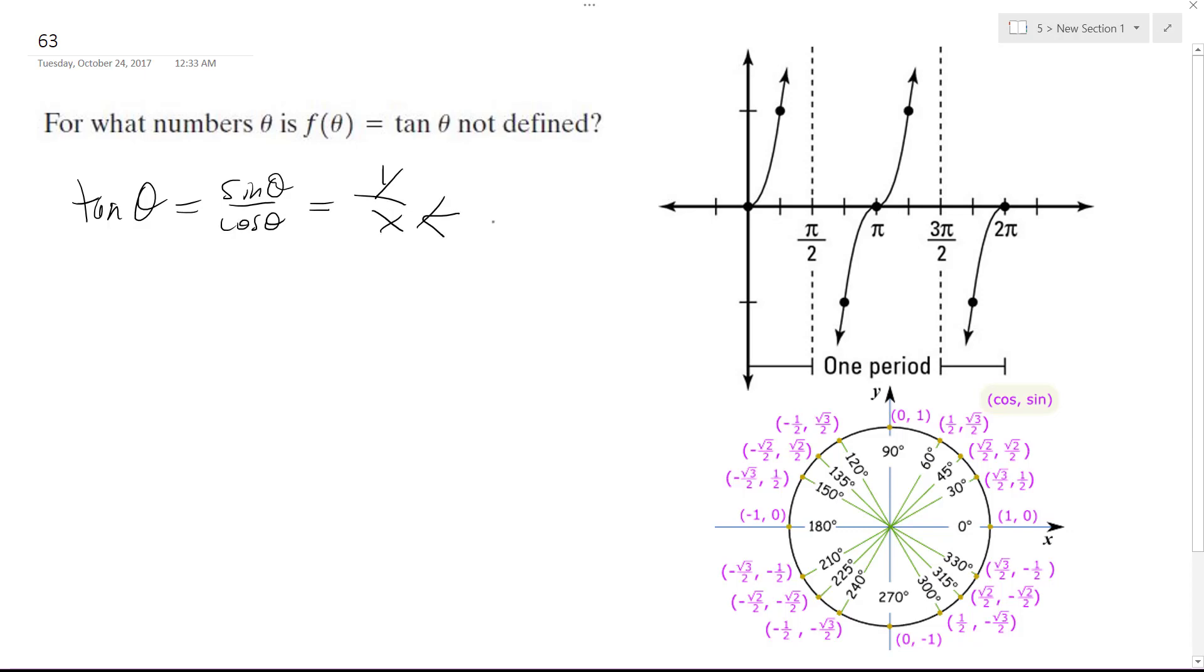So where does x equal zero? On a typical graph, x equals zero at π over two, where y is equal to one.